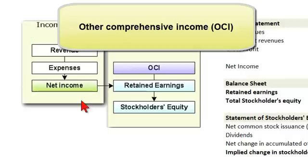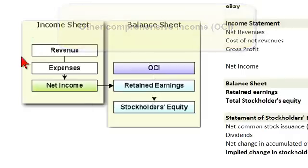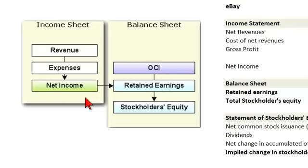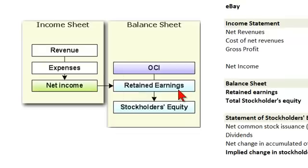We know from the income statement that revenue minus expenses equals reported net income — what we sometimes call the bottom line on the face of the income statement. Keep in mind, this is recognized under the accrual basis. We know that increases in net income, or just the net income account itself, if positive, will increase the retained earnings on the face of the balance sheet.